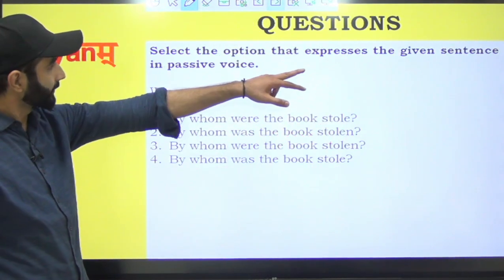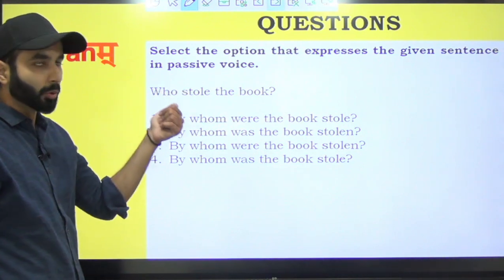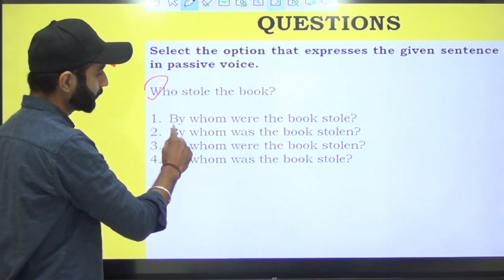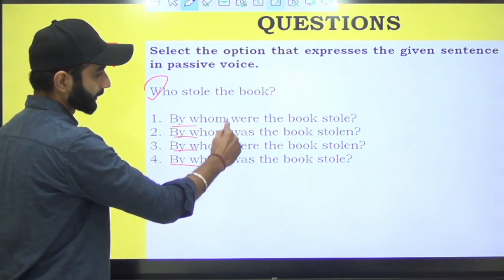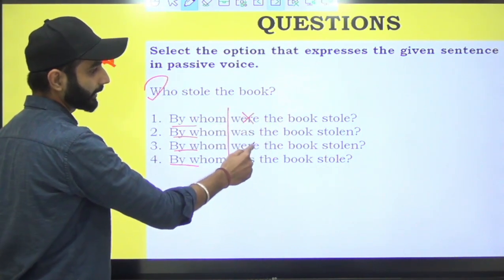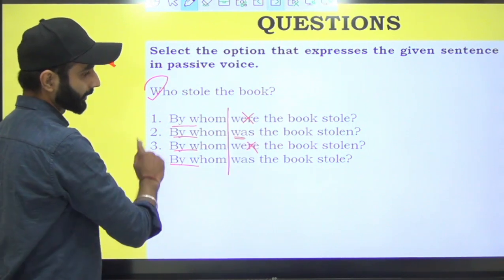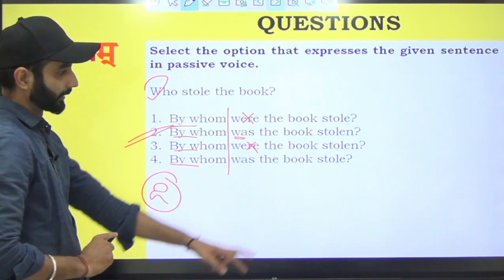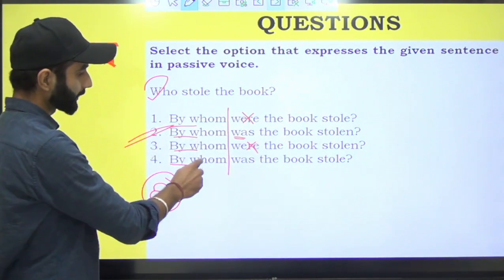That best expresses the given sentence in passive voice. Who stole the book? Yeh book kisne churai thi? 'Who' ka lag jayega 'by whom' in all four options. 'Was' toh lagega for book. So was the book stolen? Option is two. Not 'stole', it should be 'stolen'.